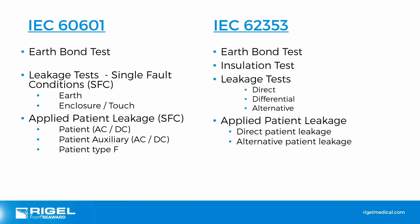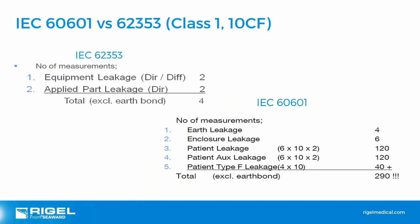Comparing IEC 60601 versus 62353: the tests are related but procedures differ. With leakage tests you have three different methods depending on the situation in 62353. The time saving is substantial — with 10 F-type applied parts, 60601 requires up to 290 tests compared to just 4 in 62353 (excluding earth bond). Even with a couple of applied parts, 60601 generates far more tests. This is achieved simply by grouping leakages together — there is no need to measure all leakages individually when you're already measuring total leakage.